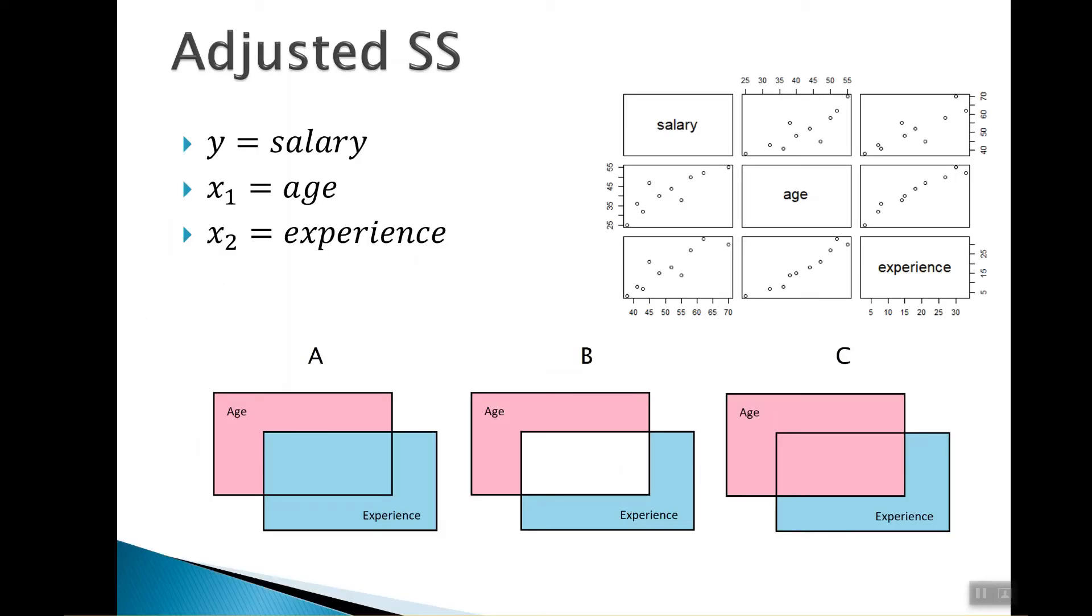So this graph up here at the top right is called a scatterplot matrix. And this is nice because you can see how all the variables are related to each other. This one here is showing us the relationship between salary and age. So older people tend to make higher salaries. This one is showing us the relationship between experience and age, more experienced people make higher salaries. But not surprisingly, there's also a strong correlation between age and experience, right? It's not possible to have lots of years of experience when you're young. So all of the variables are correlated with each other.